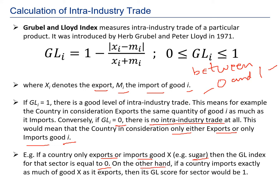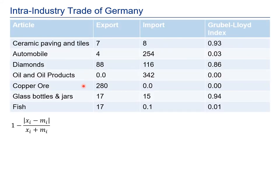If a country imports exactly as much as it exports, the Grubel-Lloyd Index score would be a perfect 1. Now that we know the formula, here is a practice table showing intra-industry trade of Germany. This is not actual data but will help you understand the formula and give you confidence to solve these problems.